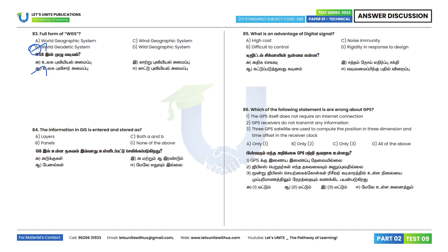Question 84: The information in GIS is entered and stored as layers. Option E is the correct answer. Question 85: What is an advantage of digital signal? Noise immunity is the advantage; high cost and difficulty to control are disadvantages. Option E is the correct answer.